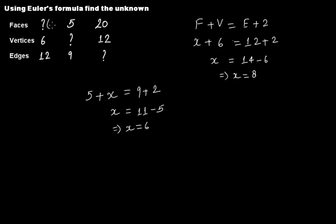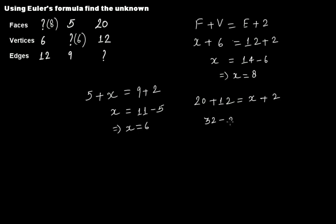In the third case, faces is 10, vertices is 8, and edges is unknown (call it X). So 10 plus 8 equals X plus 2, which gives 18 equals X plus 2, so X equals 16. Wait — with faces 10 and vertices 12, we get 10 plus 12 equals X plus 2, so 22 minus 2 gives X equals 20.